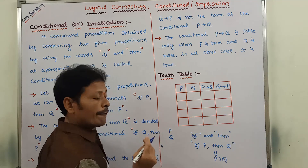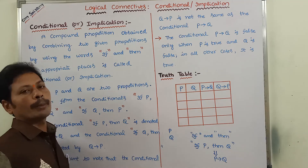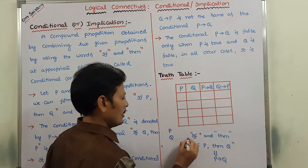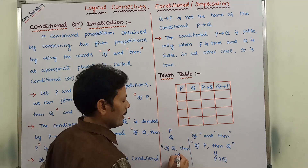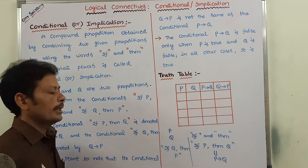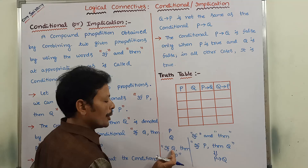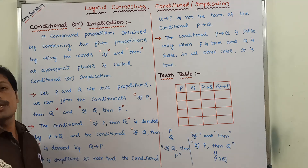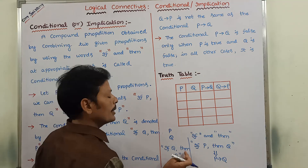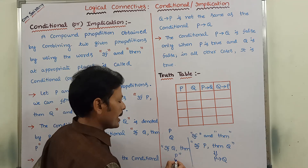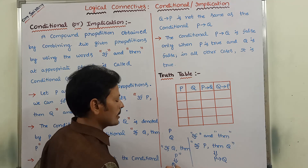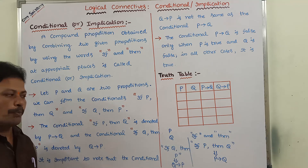Another way we have to combine these two propositions. If we have to combine these two propositions, then word can be used between the two propositions. It can be symbolically represented as Q Conditional P.